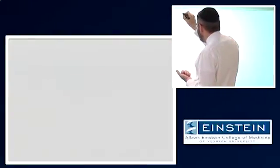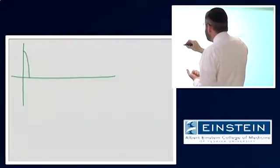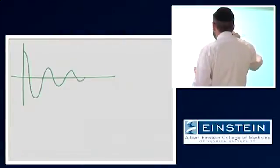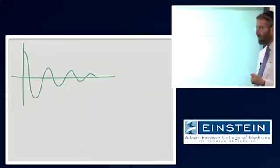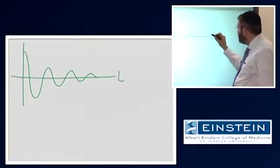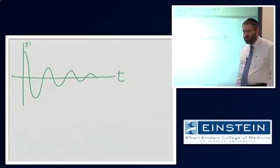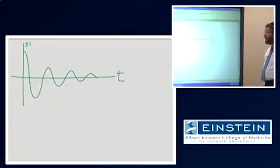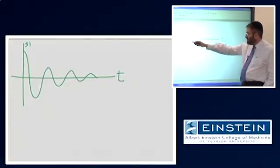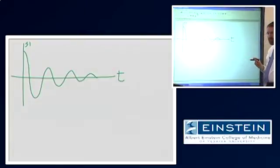First of all, just to touch on this briefly, we've said that the signal might look something like this. And this is time, this is signal intensity, which might be voltage or current, depending on how we're measuring it. And this is a continuous or analog measurement of voltage over time.